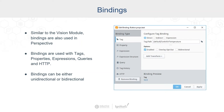Similar to the Vision module, Perspective uses bindings, which allow you to bind properties of components to different sources of data. That can be tags, calculations, queries, REST bindings — there are a lot of different binding types that Perspective brings to the table. By default these bindings are unidirectional, but certain bindings allow you to be bidirectional, for example tag bindings, where you can write back to that source target.